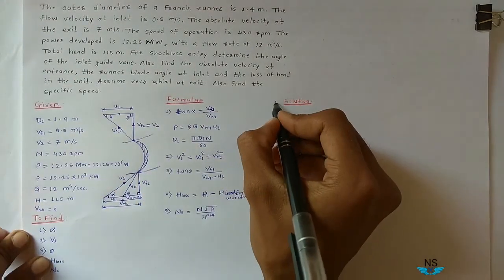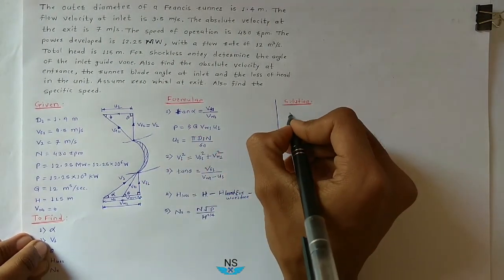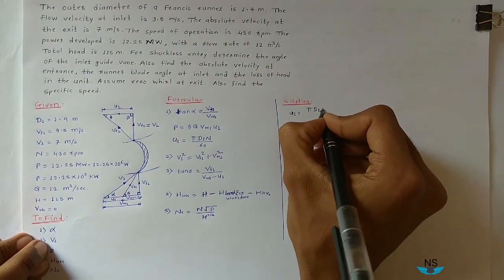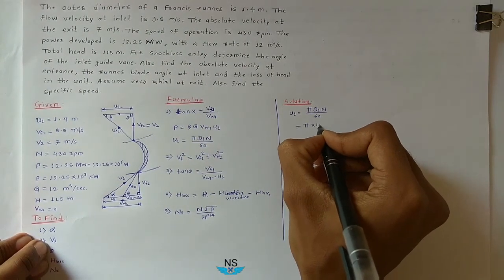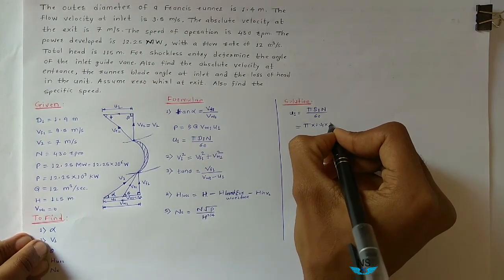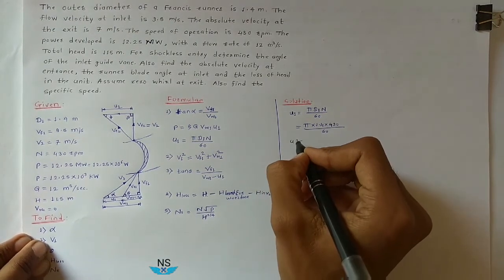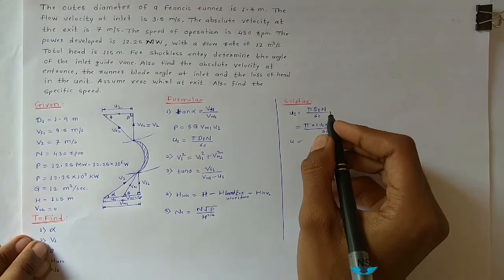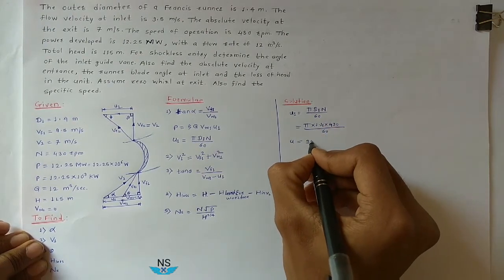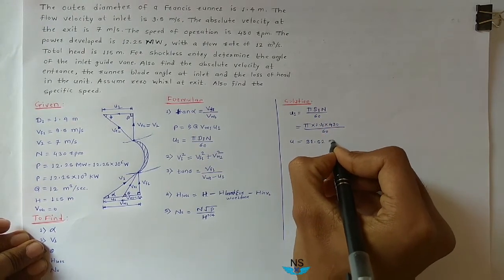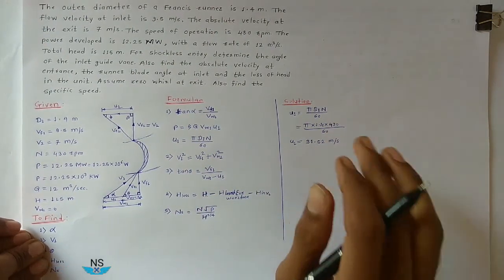First, find out U1. U1 = π × D1 × N / 60 = π × 1.4 × 430 / 60. The value of U1 becomes 31.52 meter per second.